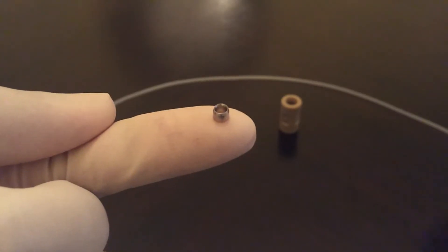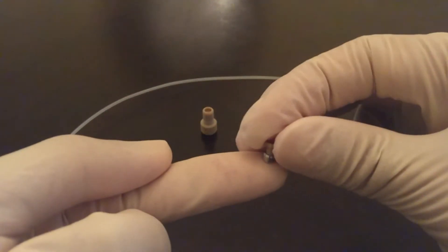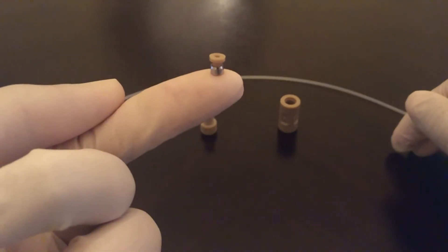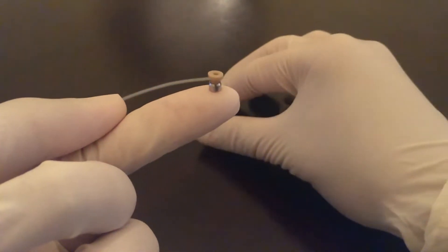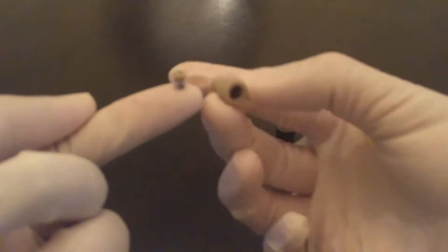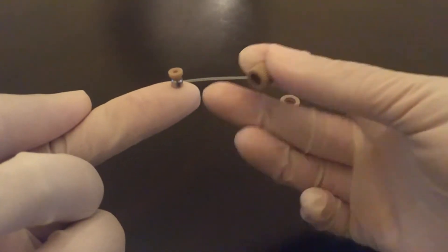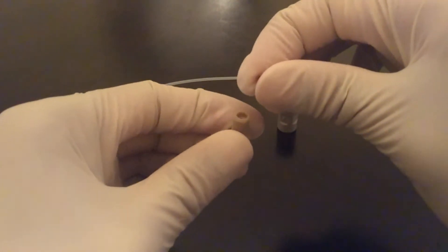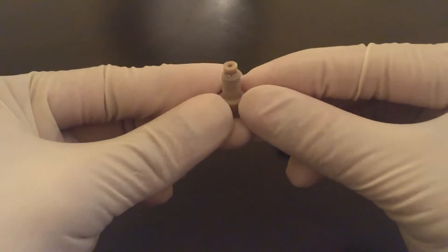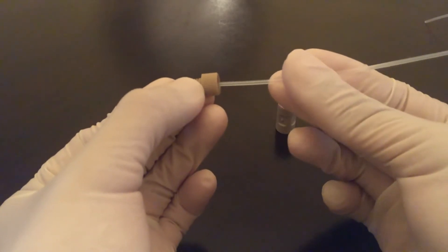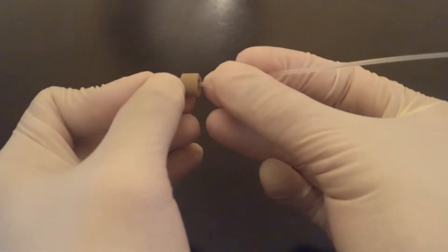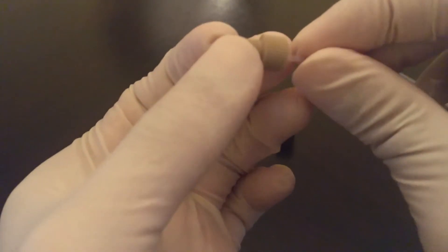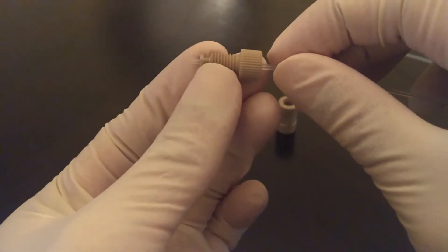Place the lock ring over the PEEK ferrule. Make sure the flat face of the ring faces away from the ferrule. Insert the tubing through the nut from the opposite end of the thread to include the ring lock and ferrule. Allow tubing to exit from the ferrule such that the tubing is not flush with the ferrule.